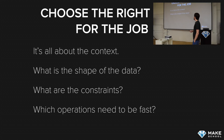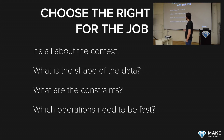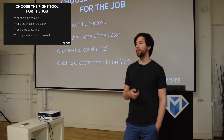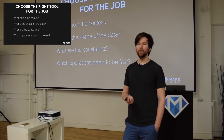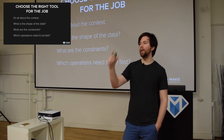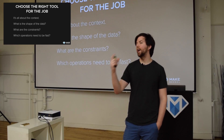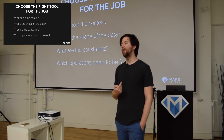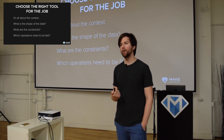It's all about context: what is the shape of the data, what are the constraints on it, and which operations need to be fast. When we talk about which operations need to be fast, we normally call that a complexity analysis. That's what was introduced with big O notation. Whenever we analyze how fast an operation is on a data structure, we'll do it using big O of N, big O of one, big O N squared, and similar notations.